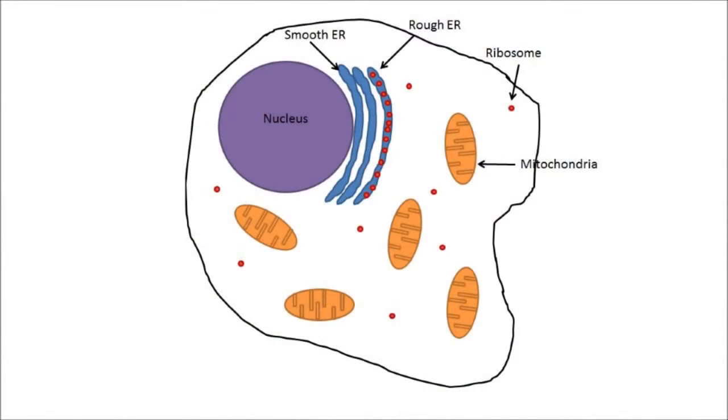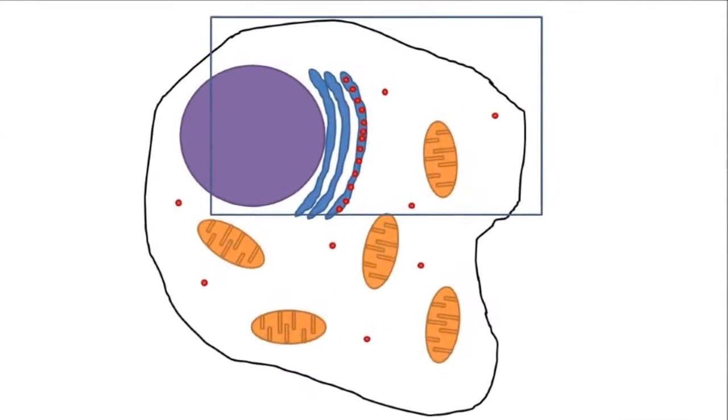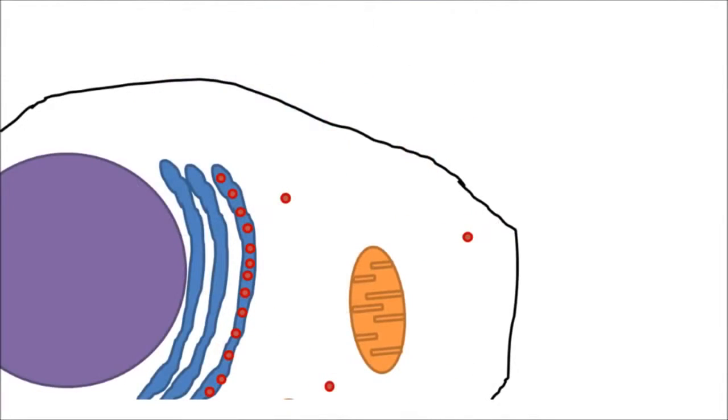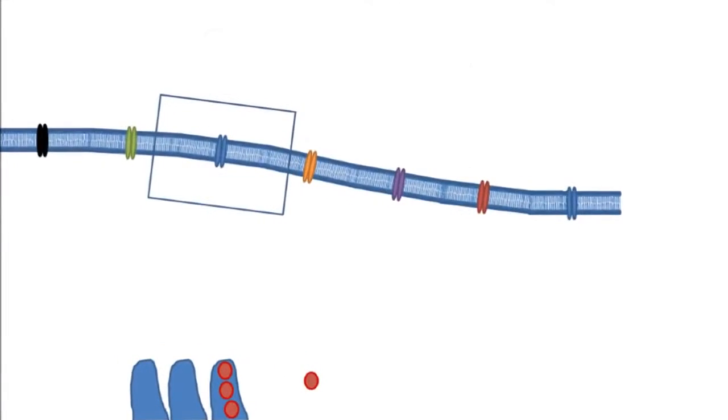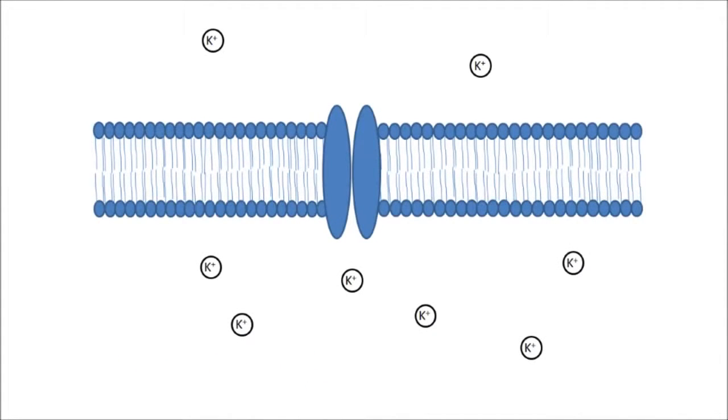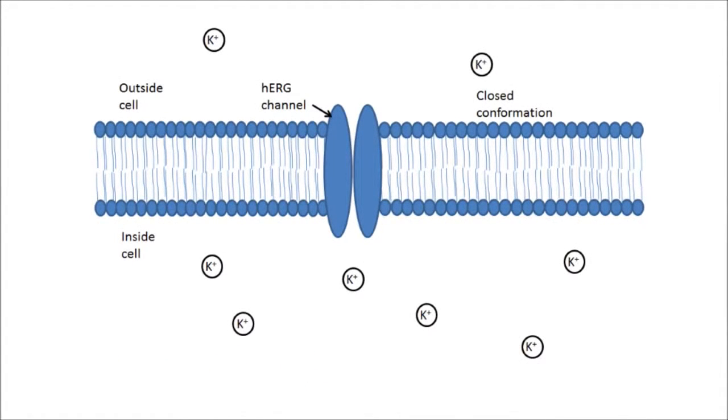Ion channels are ultimately responsible for developing the heart's rhythm or its beat. This begins at the cellular level. On the surface of every muscle cell in the heart, there are pores called ion channels. It is these ion channels that can open and close to allow sodium, calcium and potassium ions that are electrically charged to flow in and out of the cells.